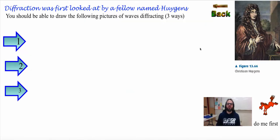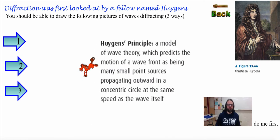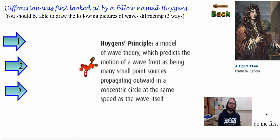Before we get to Young, we have to look at Christian Huygens, a Dutch physicist. He came up with a principle — a model of wave theory which predicts the motion of a wavefront as being many small point sources propagating outward in a concentric circle at the same speed as the wave itself.